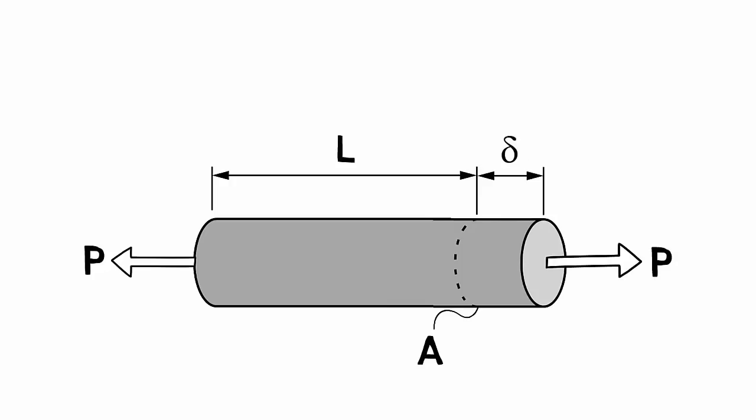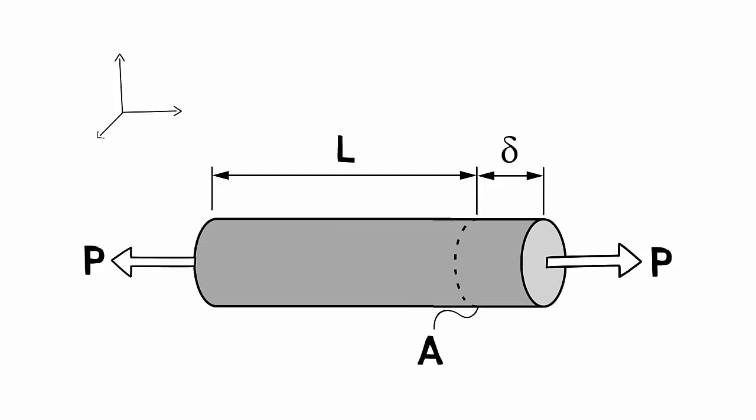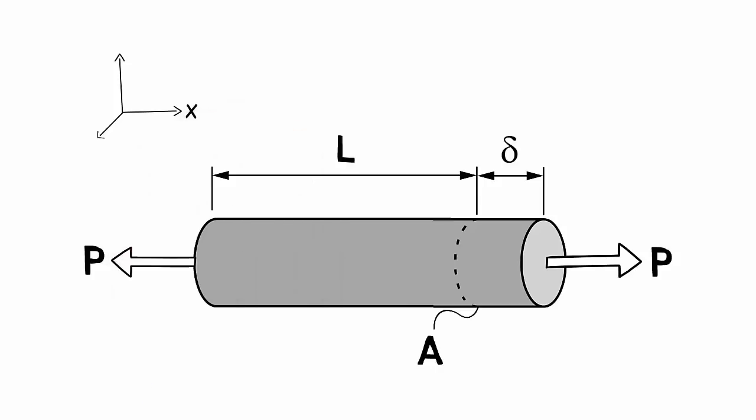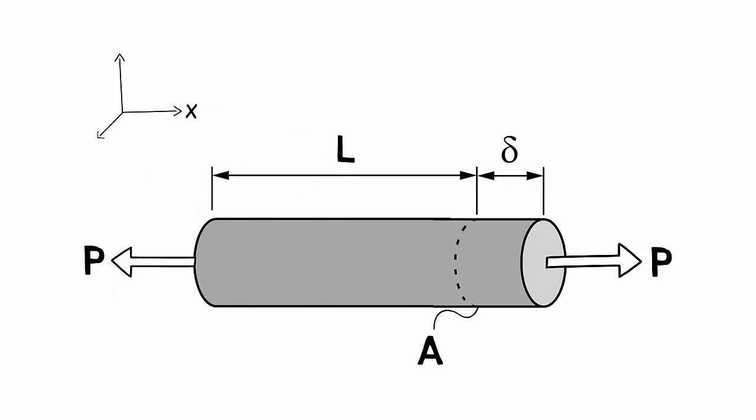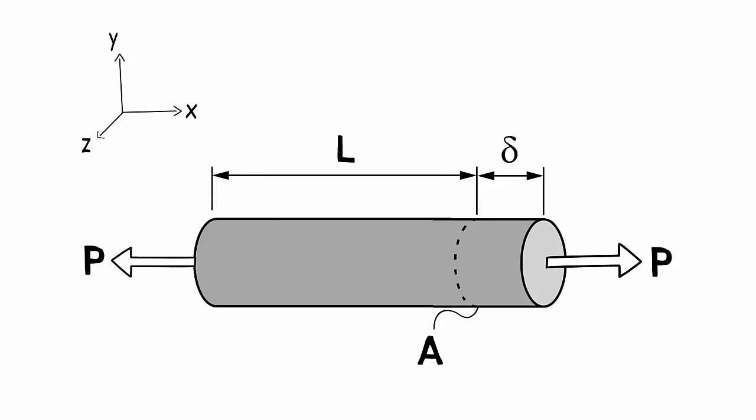Before we can apply Hooke's Law, we need to establish a local coordinate system for our rod. We will do so by aligning the x-axis with the axis of the rod. The directions of the y- and z-axis do not matter as much due to the axisymmetric nature of the problem, so we will just draw them as shown here.